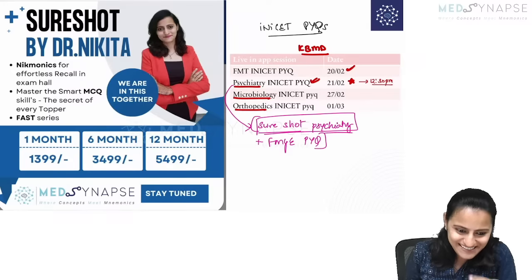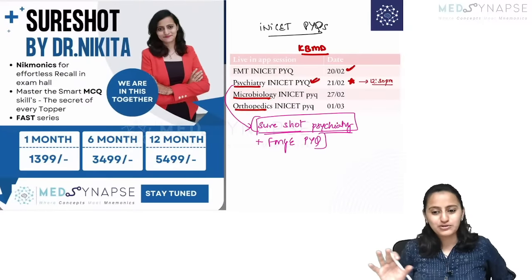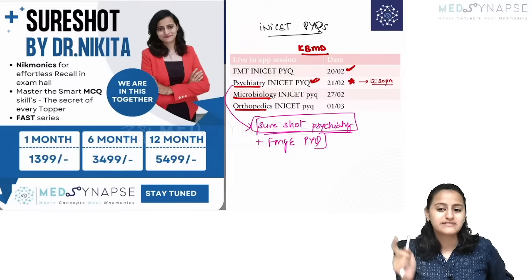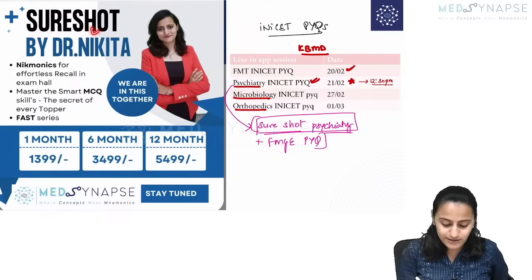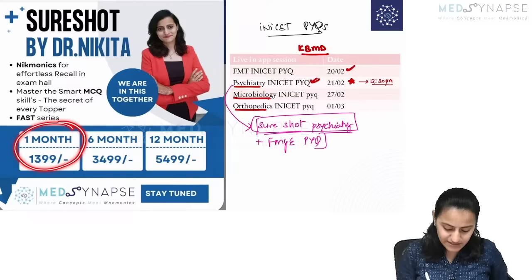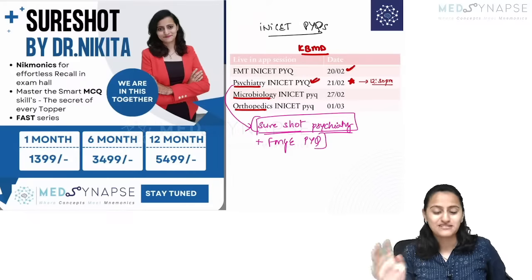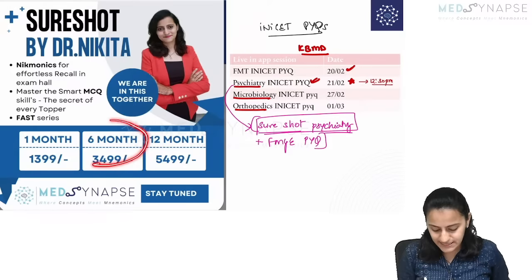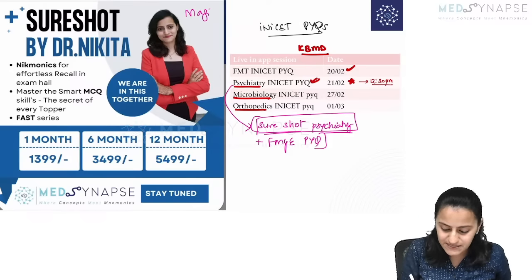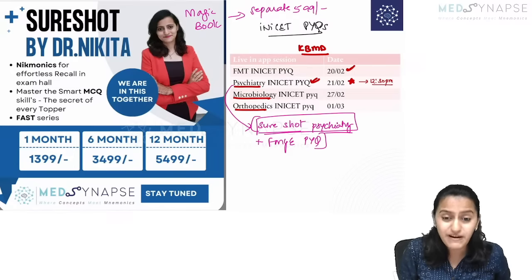I'll simplify brainstem syndromes to give you the gist. Remember, your homework after this session is to solve the MCQs and tell me how many you got right and how easy you found it. For students wondering about the Med Synapse app subscription: we have one-month, six-month, and twelve-month subscriptions. The twelve-month subscription is around ₹5,499; the six-month subscription is ₹3,499. The Magic Book is available separately at ₹599 in the app or website.